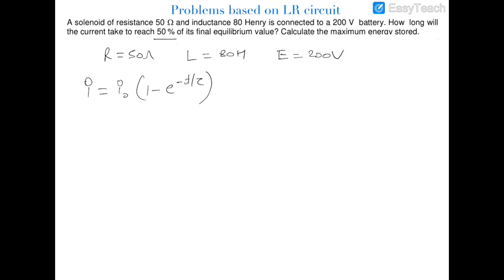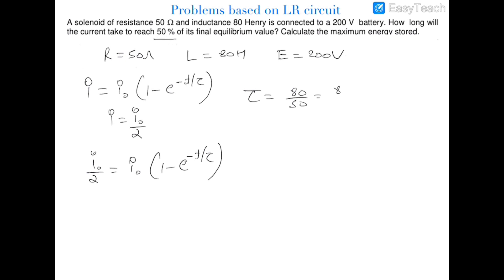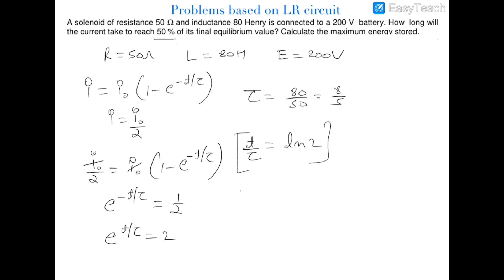We have to find out the time when i = i₀/2. Substituting: i₀/2 = i₀(1 − e^(−t/τ)), canceling i₀ gives e^(−t/τ) = 1/2, so e^(t/τ) = 2. Taking log of both sides: t/τ = ln 2, therefore t = τ·ln 2. The time constant τ = L/R = 80/50 = 8/5, so t = (8/5)·ln 2.